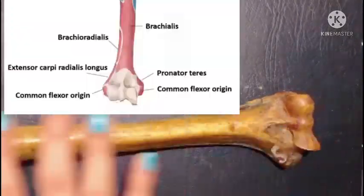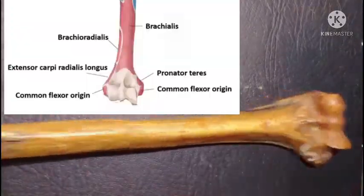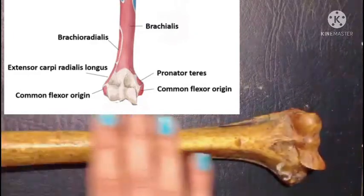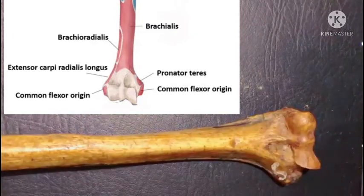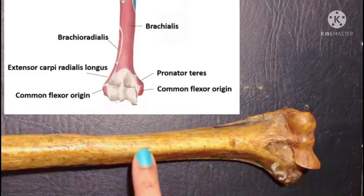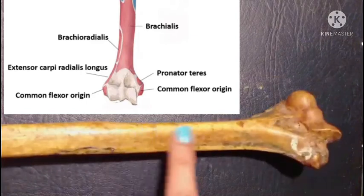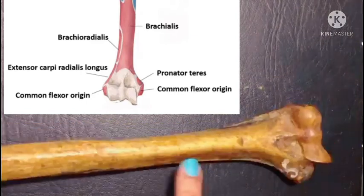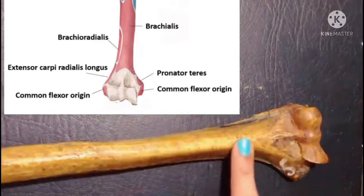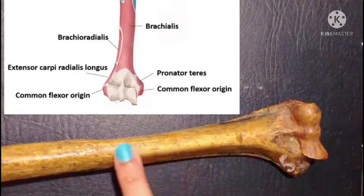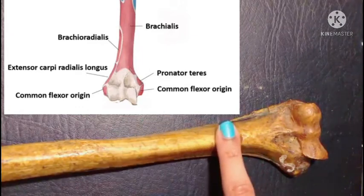Moving to the front of the shaft, the anterolateral and anteromedial surface gives origin to our first muscle of the forearm called the brachialis.